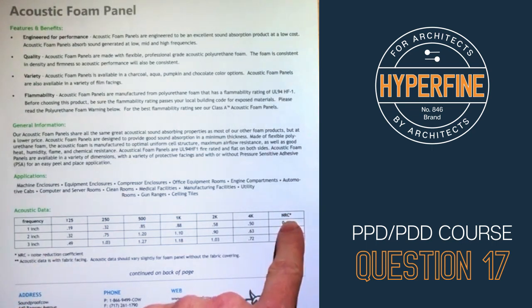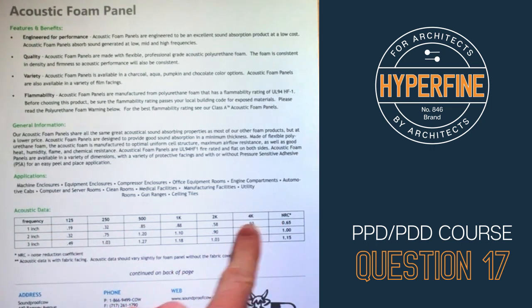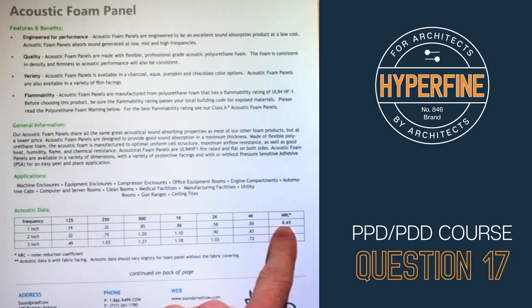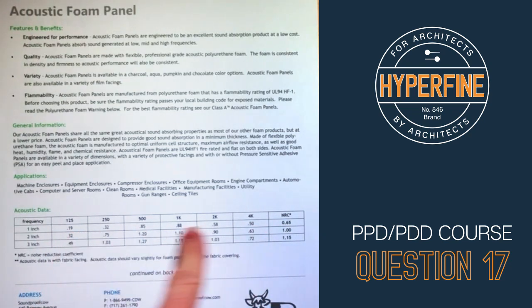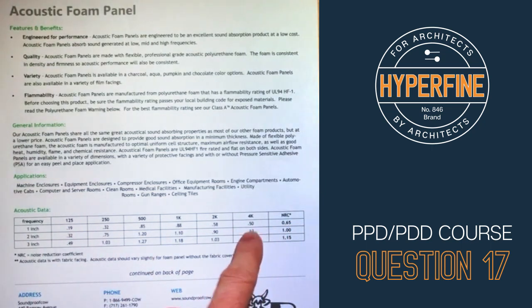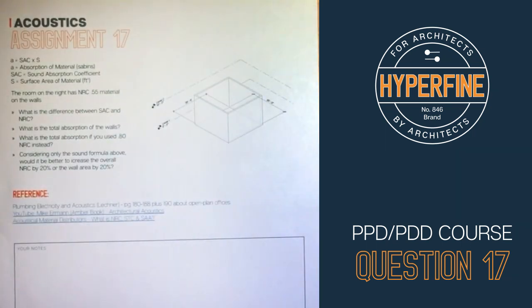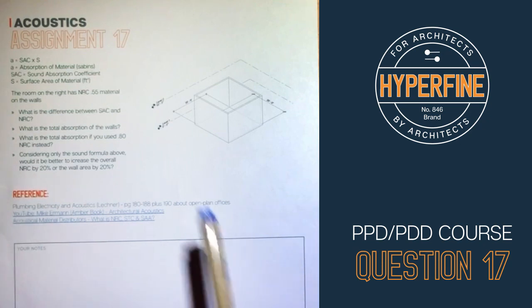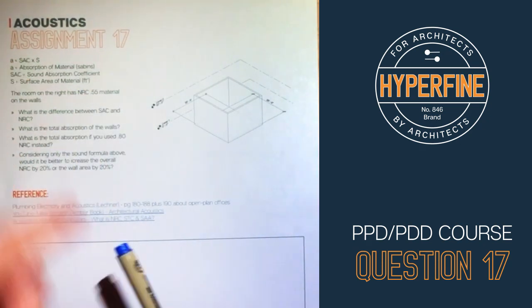NRC is the average of some of the most common frequencies. The NRC value shown (0.65) is not simply the arithmetic average of all the listed values — it's the average of the most common frequencies you'd want sound absorbing coefficients for. In many cases, SAC and NRC are used interchangeably; if no other information is given, you use the NRC in place of the SAC.